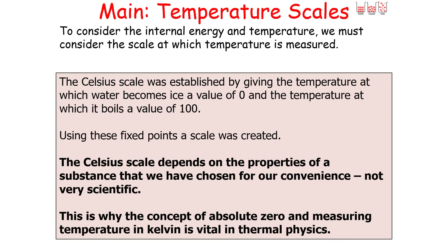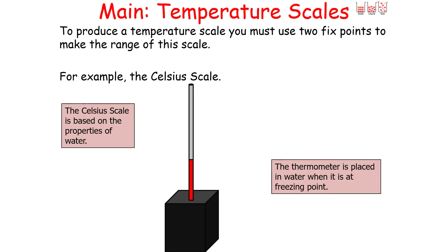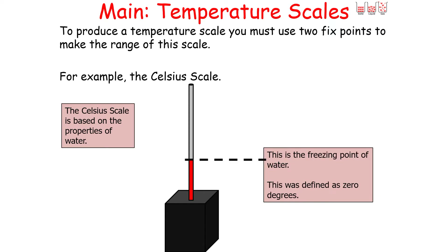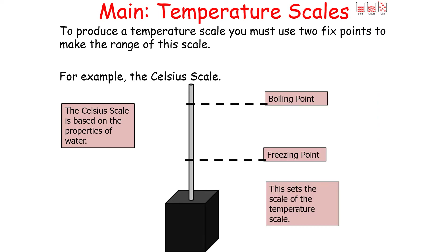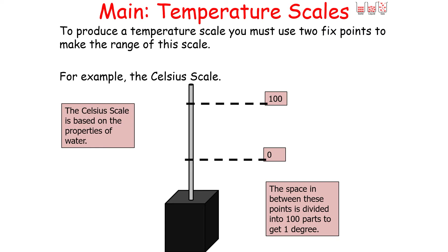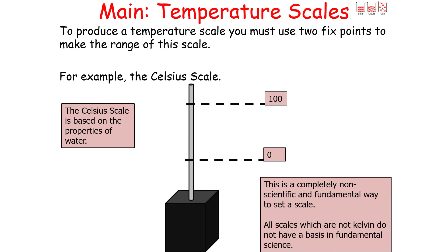To produce any temperature scale, you need at least two fixed points to make a range. The Celsius scale is based on the properties of water: a thermometer placed in water at freezing point is defined as 0 degrees Celsius, and at boiling point is defined as 100 degrees Celsius. This sets the scale, and the space between these two points is divided into 100 parts to get 1 degree. This is a completely non-scientific and non-fundamental way to set a scale — it's abstract.